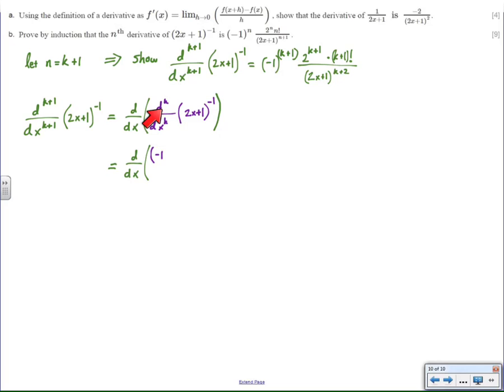So I have to substitute in what I assume to be true, the derivative of the kth derivative is supposed to be this. And if I take the derivative of the kth derivative and I get this formula, that means I've induced proof.